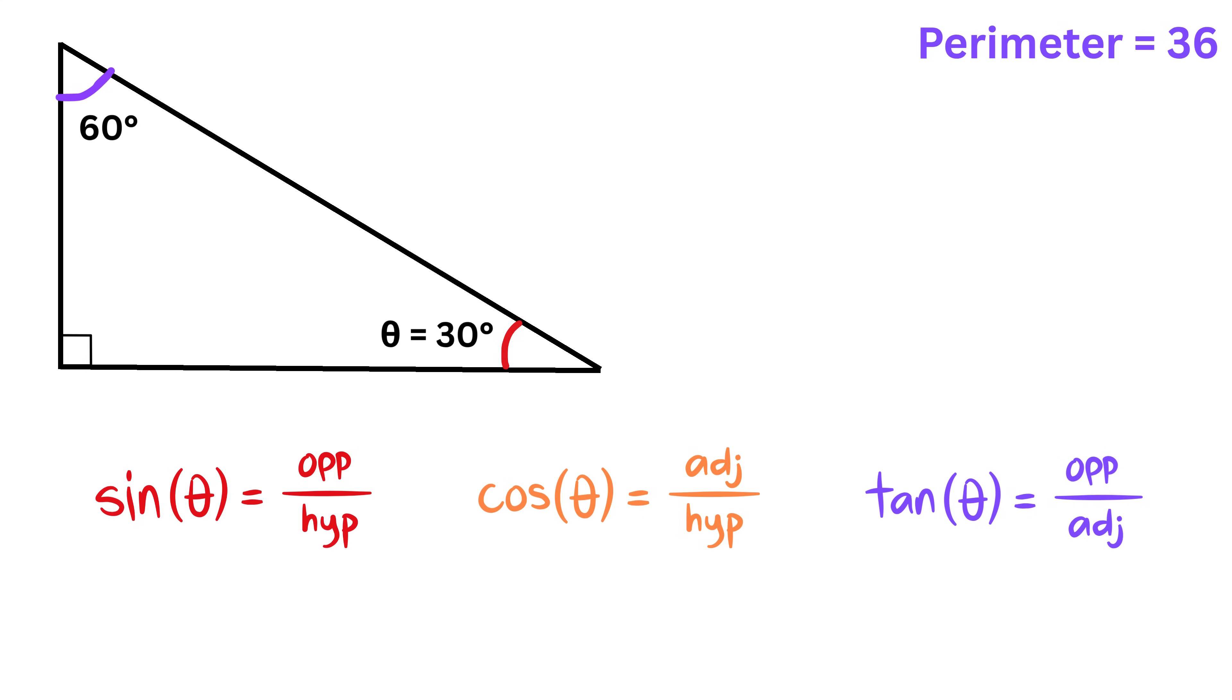For the special angle of 30 degrees, meaning if theta is 30 degrees, the following standard values are easy to remember. The sine of 30 degrees is one-half, the cosine of 30 degrees is root 3 divided by 2, and the tangent of 30 degrees is 1 divided by square root of 3. These standard values let us convert angles to side ratios without heavy calculation.